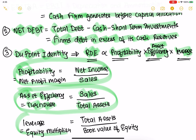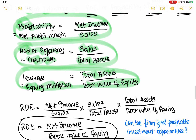The third component is the leverage multiplier — of their total assets, how much is equity and how much is debt? You can find the equity multiplier: total assets divided by book value of equity gives you the equity multiplier, which shows the leverage of the company.